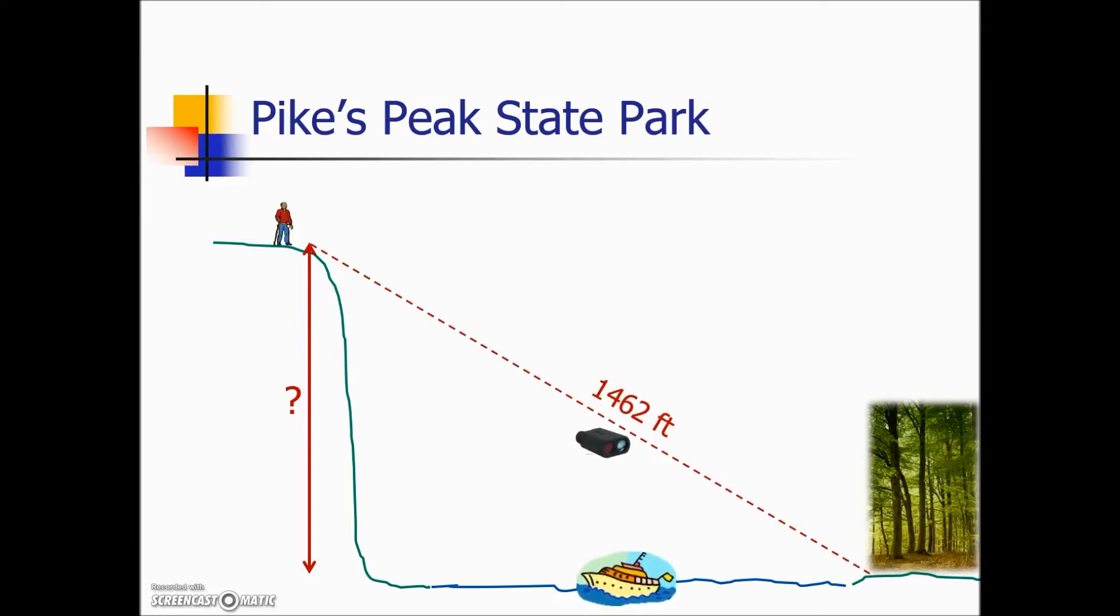The question is how high above the river are we? Using a rangefinder we pick a point and determine the distance and the river is making a right angle with our height. The rangefinder also will tell us what the angle measurement is. Sometimes this is called an angle of depression.